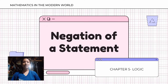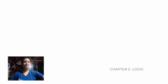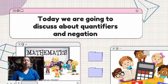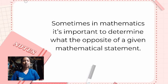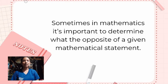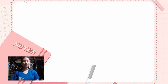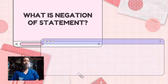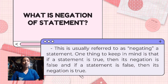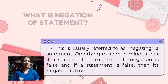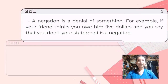Good day everyone, my name is Maria Christine. Today we are going to discuss quantifiers and negation. In mathematics, it's important to determine the opposite of a given mathematical statement. This is referred to as negating a statement. One thing to keep in mind is that if a statement is true, then its negation is false, and if a statement is false, then its negation is true.